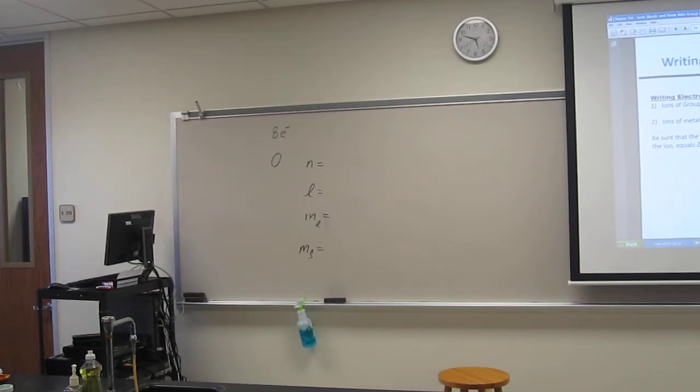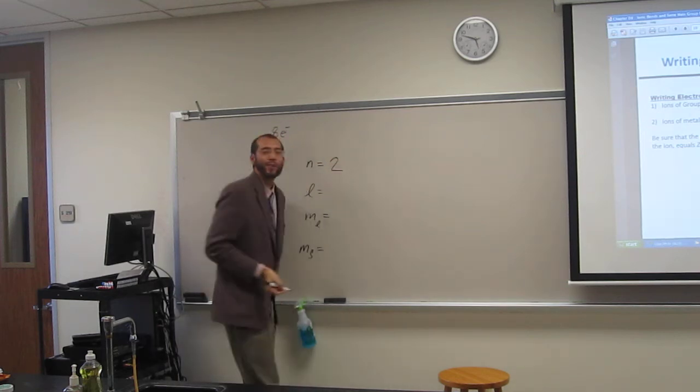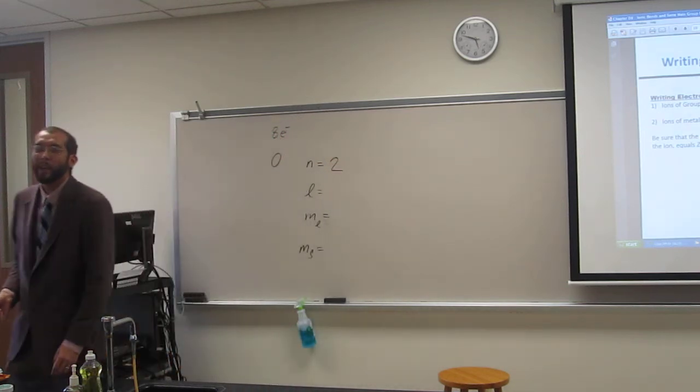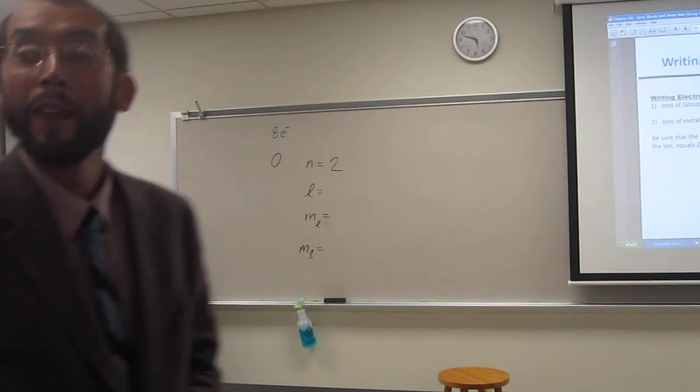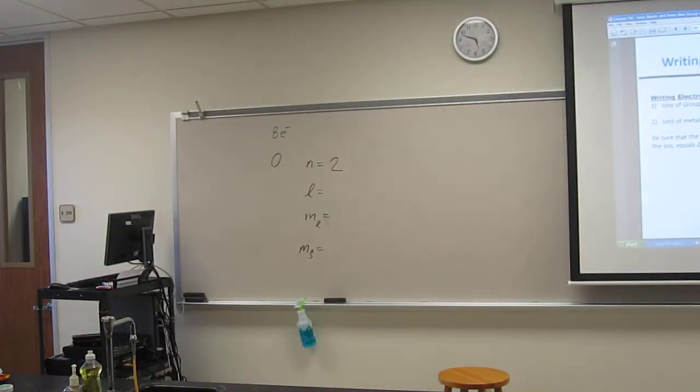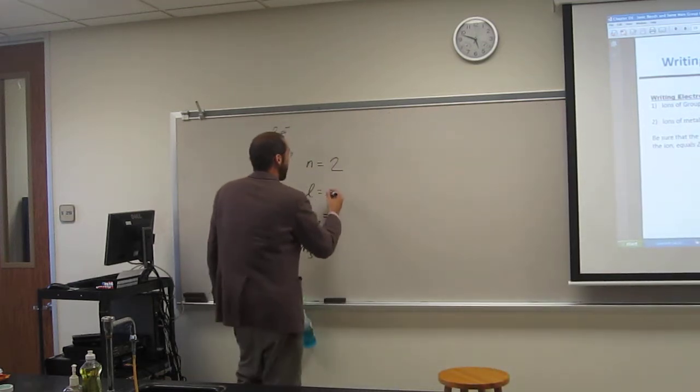Very good. Alright, was that a guess or? No, you knew that. Okay, good. So 2. Somebody else help me out. What's l? How would you figure that out? So it's 1, right? Why is it 1? It goes 0, 1, 2, 3. So if it's a p orbital, it's 1.